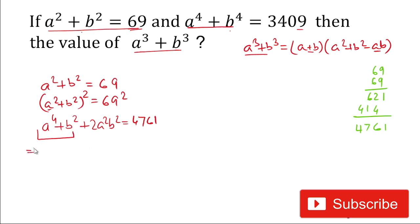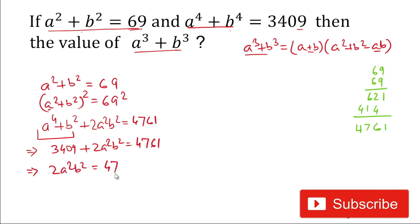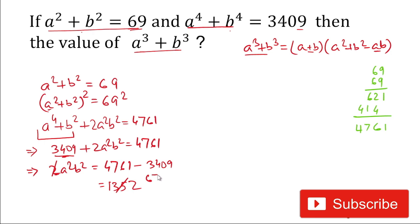We substitute the given value a⁴ + b⁴ = 3409: so 3409 + 2a²b² = 4761. Therefore 2a²b² = 4761 - 3409 = 1352. Dividing both sides by 2, we get a²b² = 676.